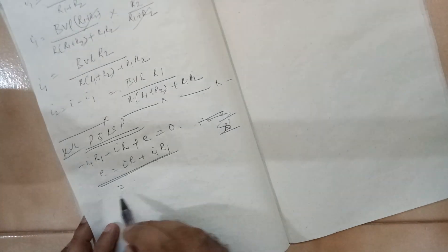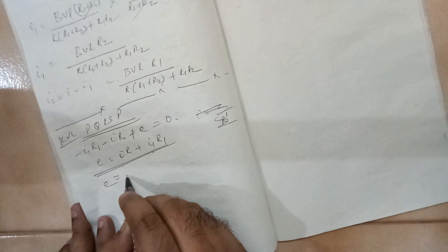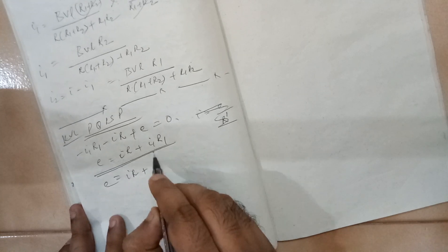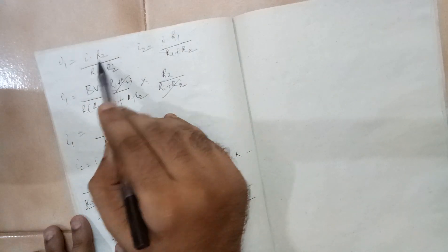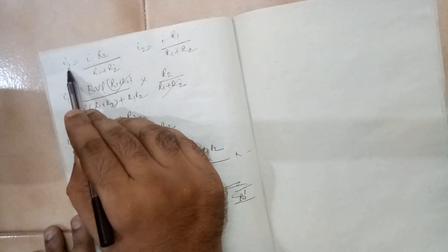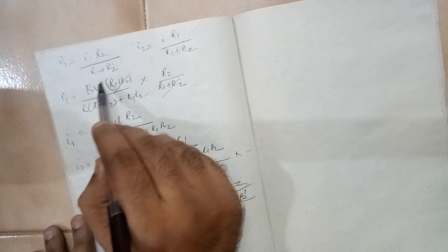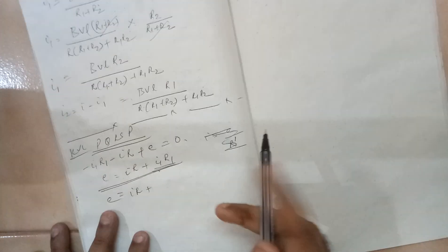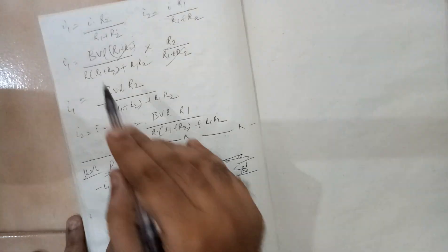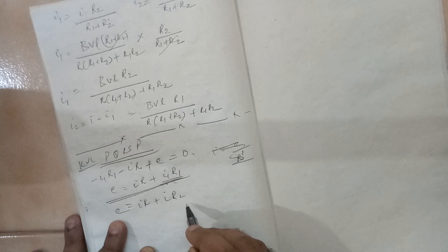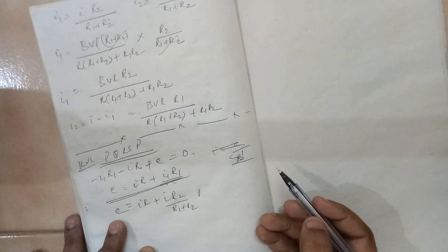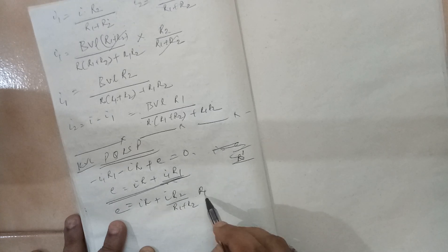So this is what we have got. E is equal to IR plus, what is I1? You see here, if it is parallelly connected, we have got this expression: I1 is equal to I R2 by R1 plus R2, so we will just put this value over here. I into I R2 by R1 plus R2 into R1.